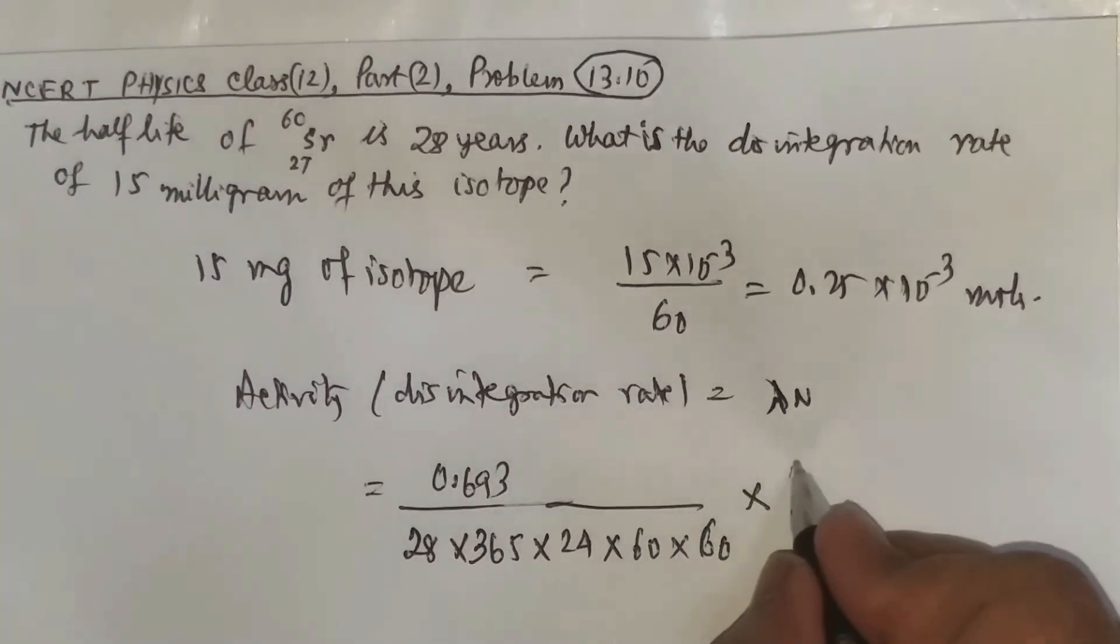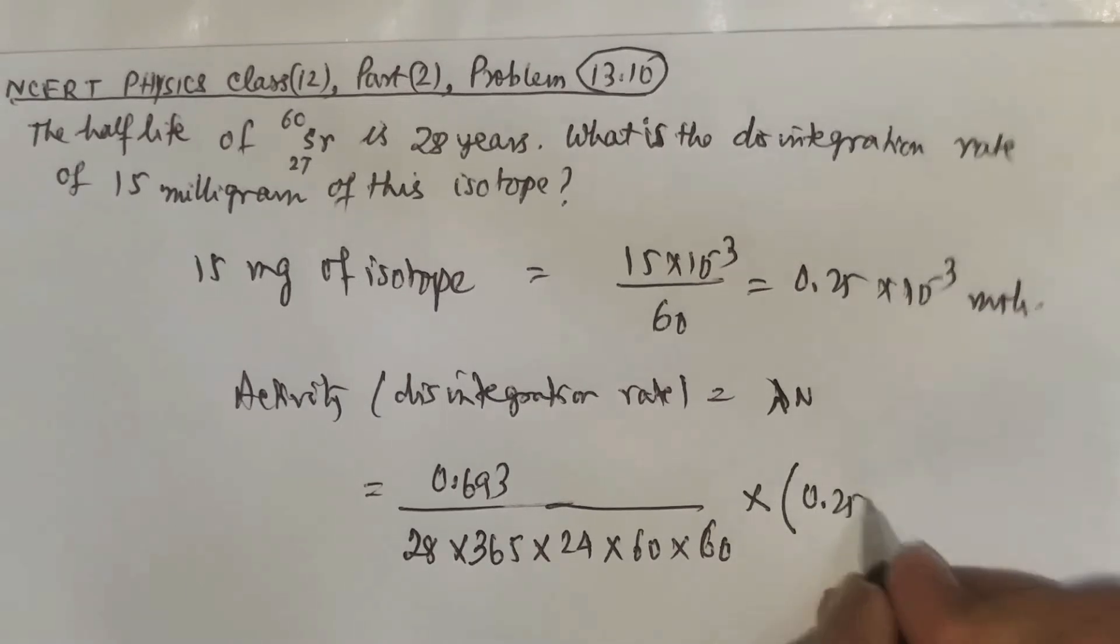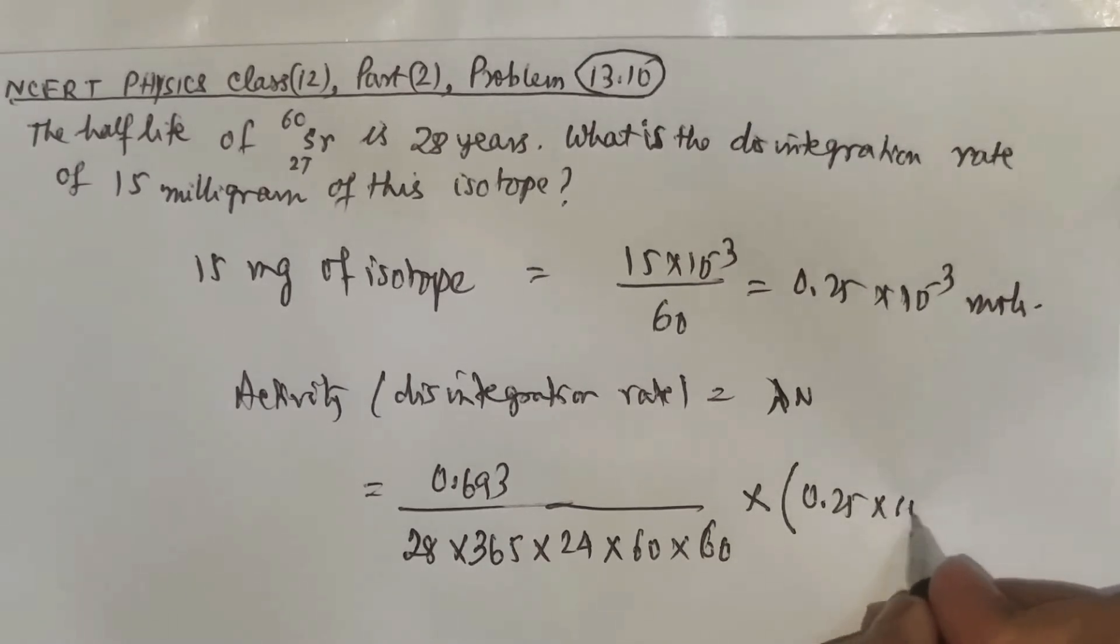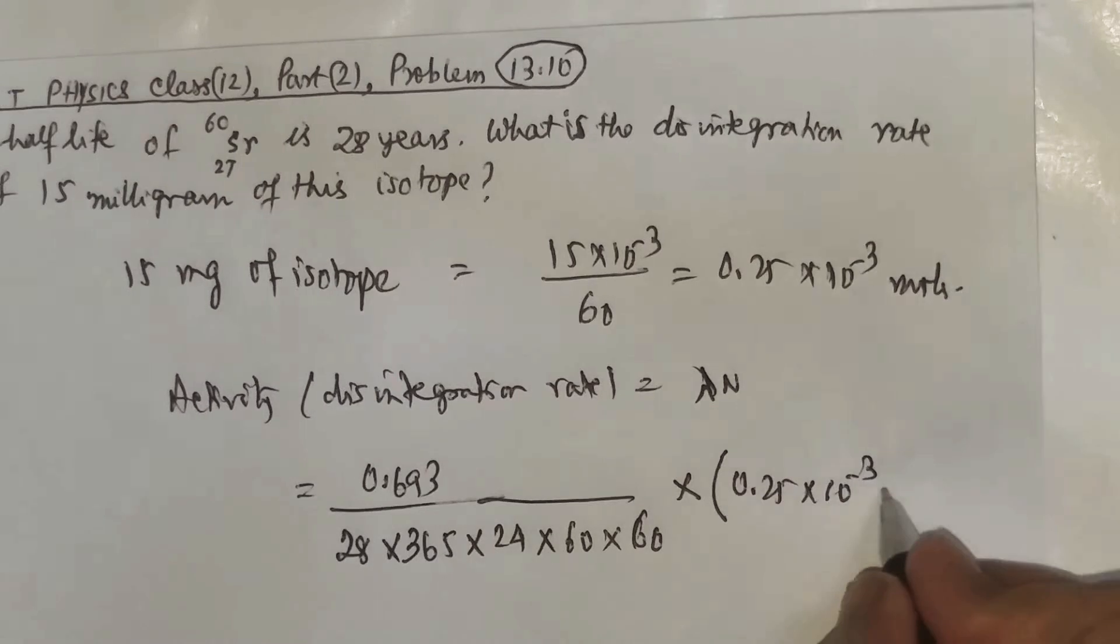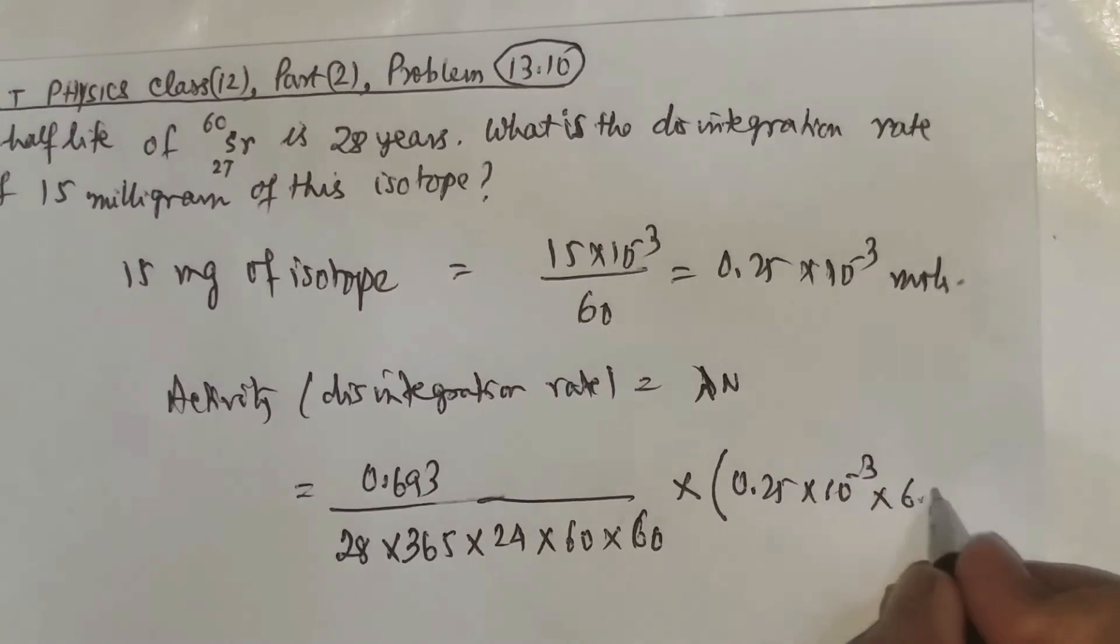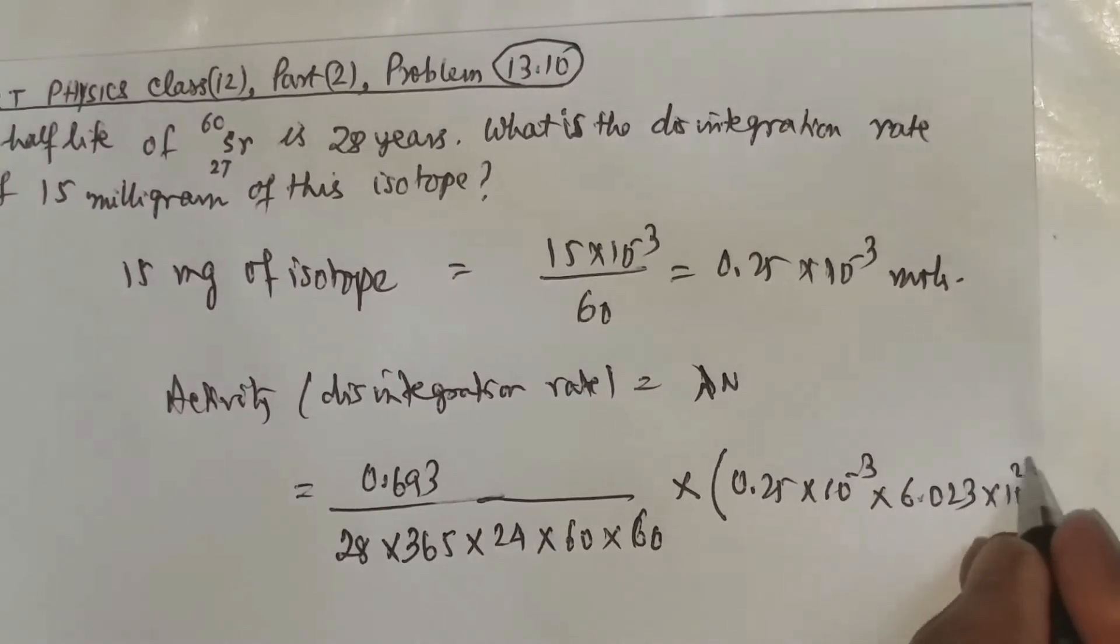n is the number of nuclei. So number of moles we have 0.25 into 10 to the power minus 3. With that we multiply by Avogadro's number, 6.023 into 10 to the power 23.